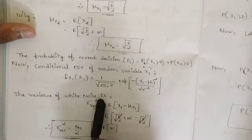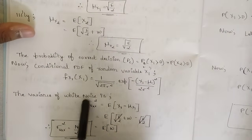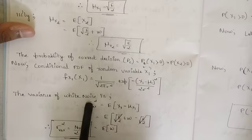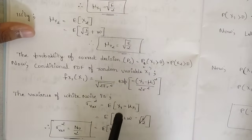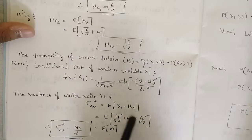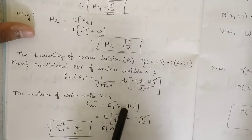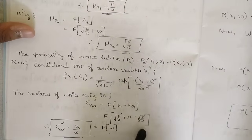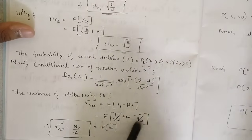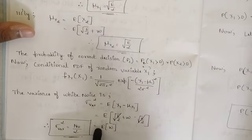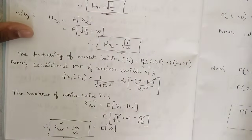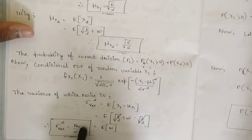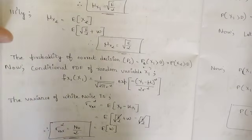The variance of white noise is given by σ² = E[(x1 − μ_{x1})²]. Since x1 = √(E/2) + w and μ_{x1} = √(E/2), the √(E/2) terms cancel, leaving E[w²]. We know that the expectation of white noise squared is given by its spectral density N0/2, so σ² = N0/2.